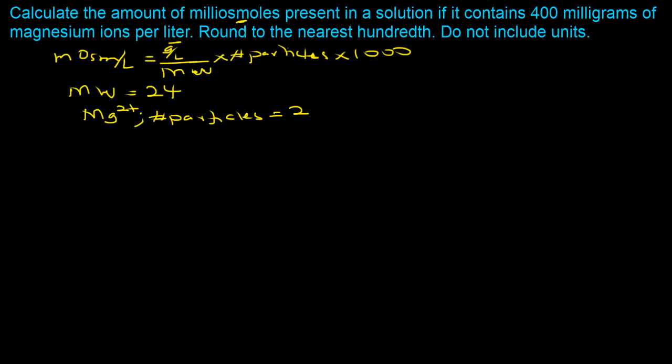The remaining piece is the quantity in grams per liter. We've been given 400 milligrams per liter, so we need to convert milligrams to grams. Most of the variation in osmolarity questions comes from how you calculate the grams per liter — that's where most of the work is. To convert: 400 milligrams × (1 gram ÷ 1000 milligrams) = 0.4 grams. Now we're equipped to plug everything into the equation.